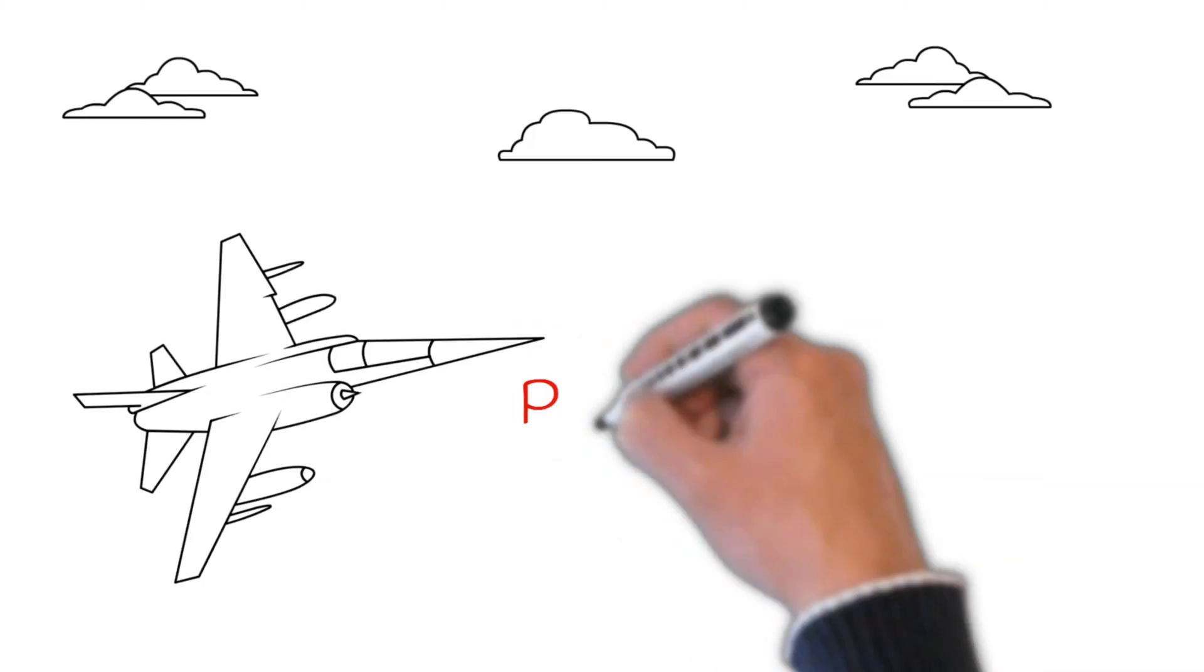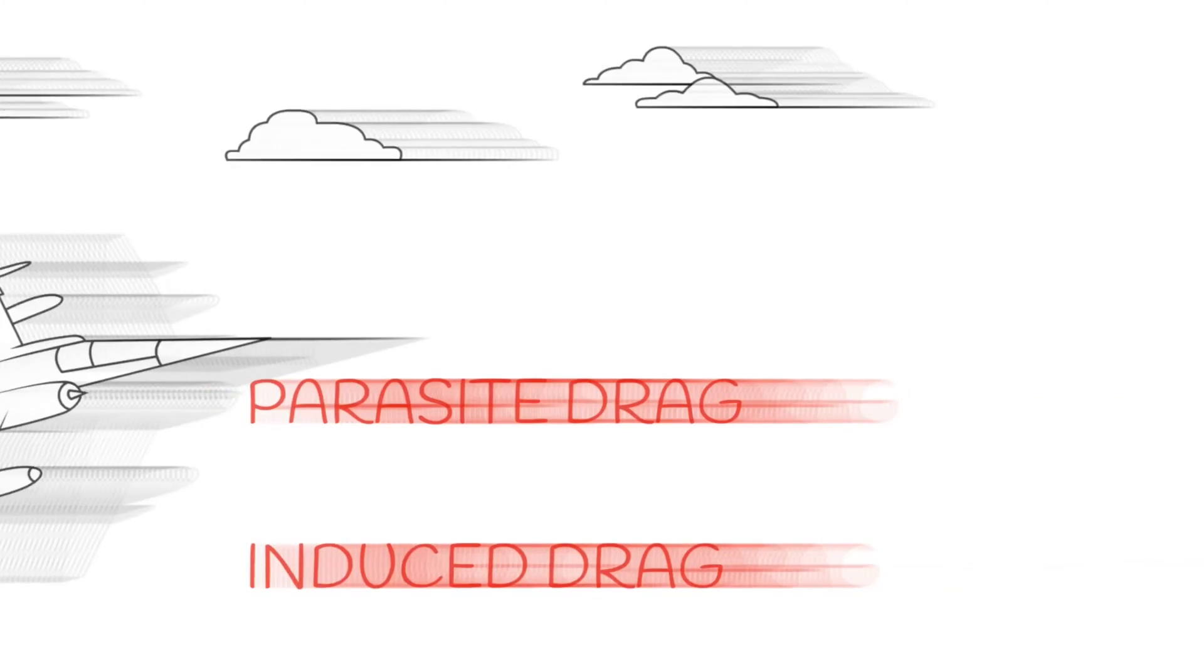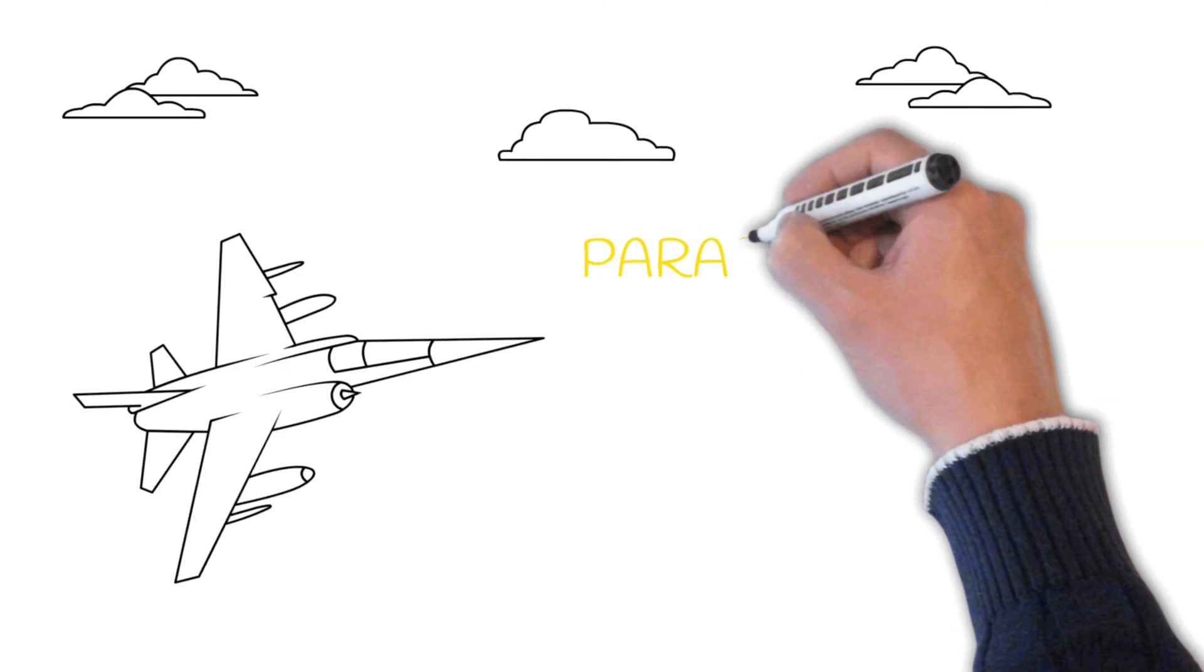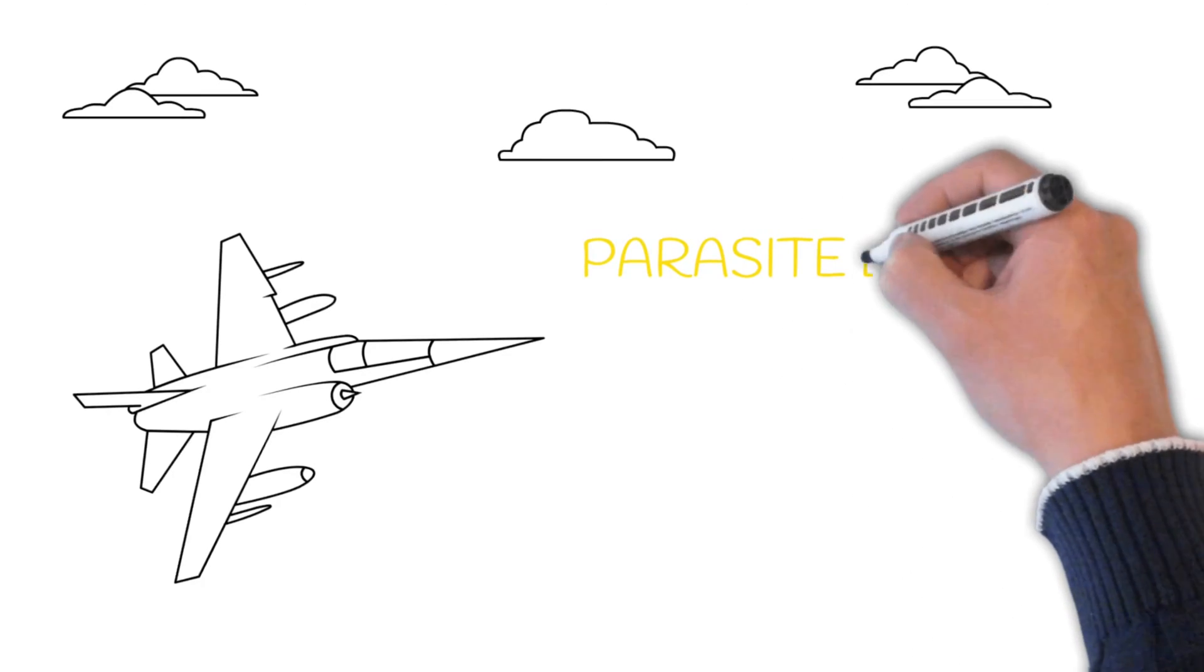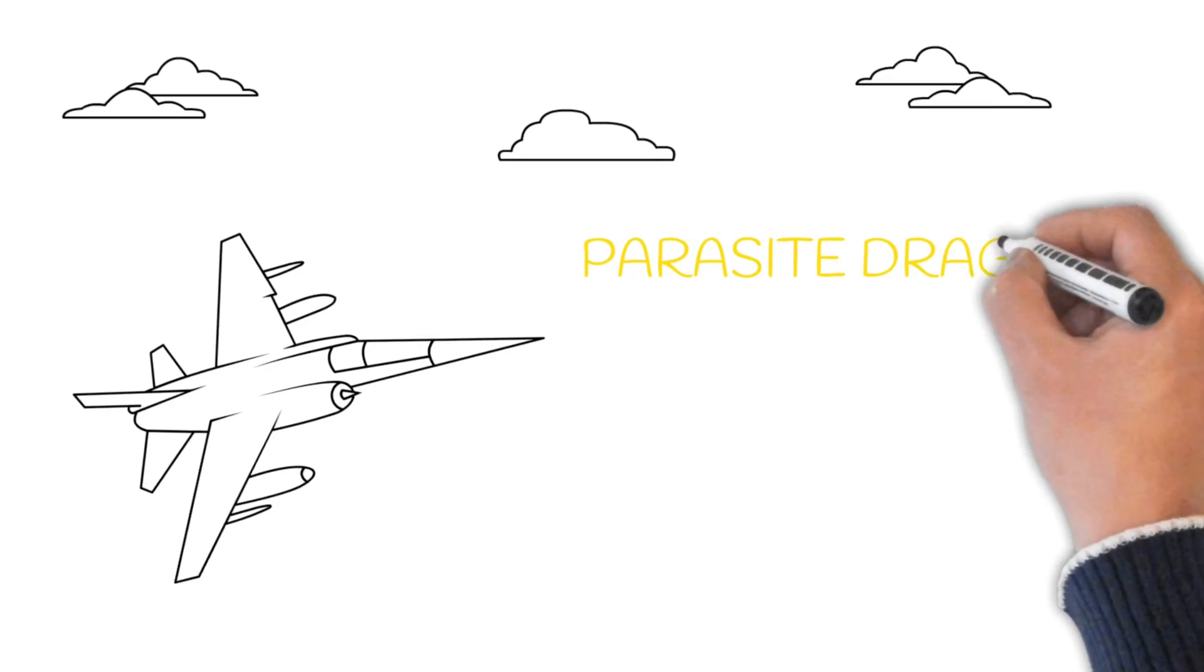There are two basic types of drag, parasite and induced drag. Have you ever stuck your hand out the window of a moving car? That's basically parasite drag.